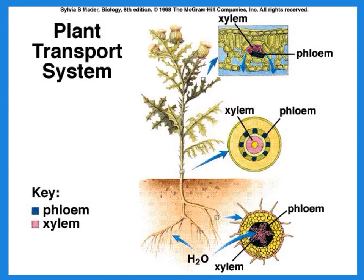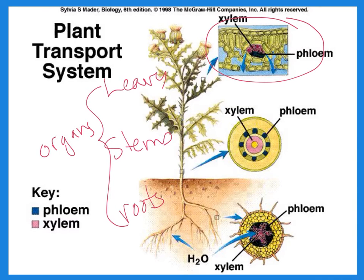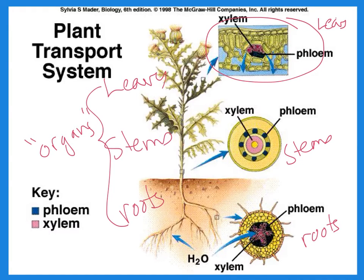If you look at the anatomy of plants, you can see a very interesting pattern of xylem and phloem in the different parts. The leaves, stems, and roots are the organs of plants — just like we have hearts and kidneys and livers. The xylem and phloem bundles make a different pattern in the leaves versus the stems versus the roots, and you can actually tell a lot about the classification of the plant by this pattern of xylem and phloem.